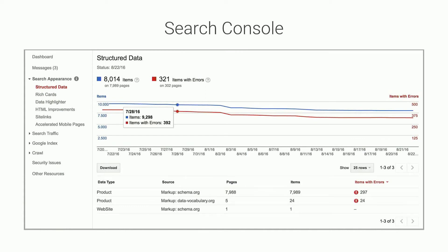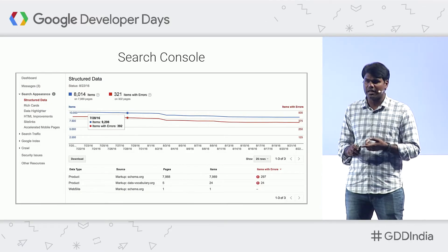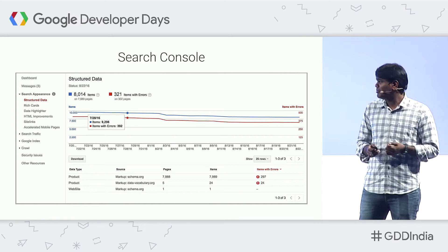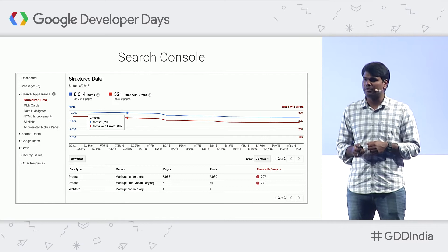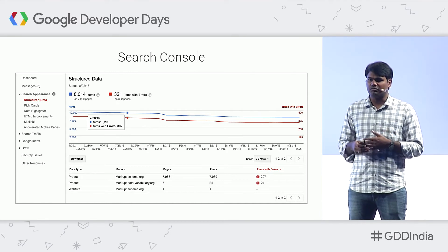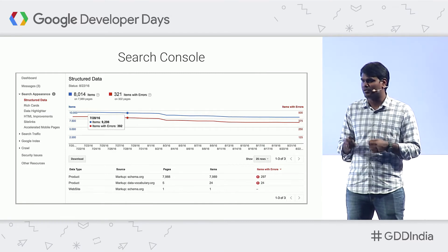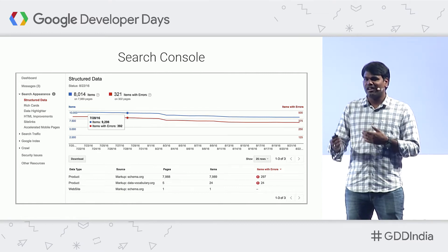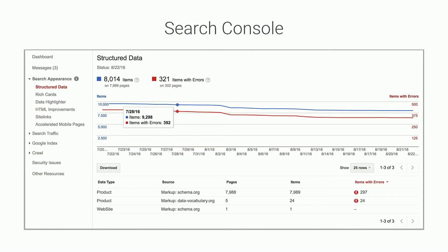Apart from the structured data testing tool, we also have a structured data feature in Search Console. This feature aggregates all of your structured data information found across a certain period of time and shows all the different data types and errors noticed on your website. I'd urge you to visit the developers page for structured data, specifically because even though schema.org has many data types, Google only supports a certain subset — and the developers page lists all search features and what data types are supported.